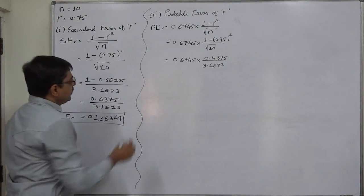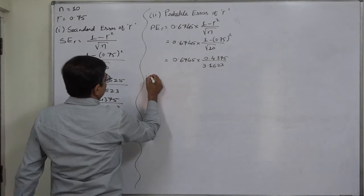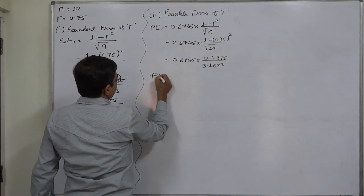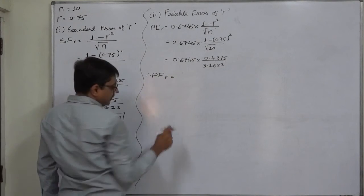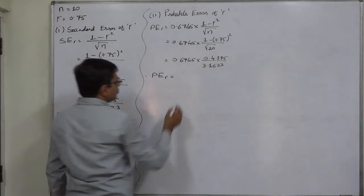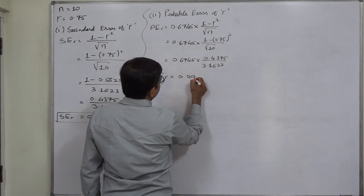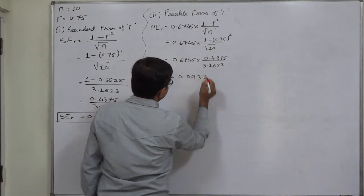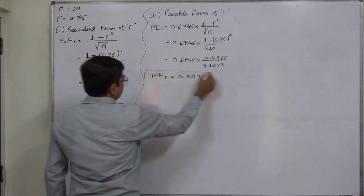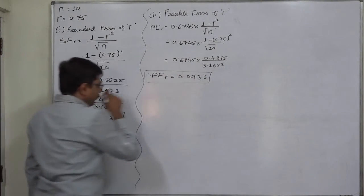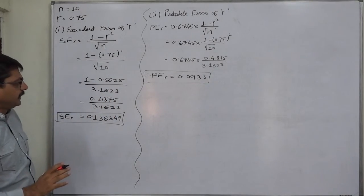If we simplify all these values, the result will be: probable error of the sample correlation coefficient equals 0.0933. This is the nearest value.